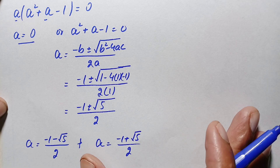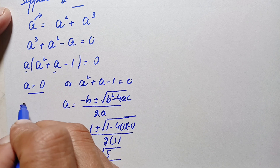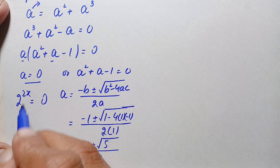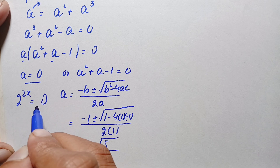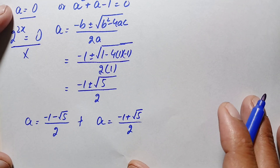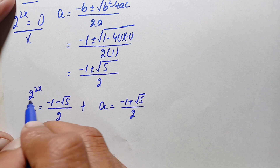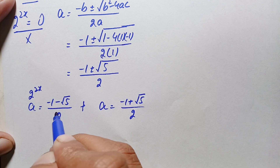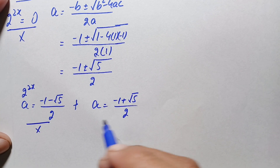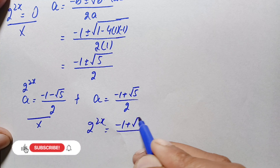Returning to our supposition a = 2^(2x): if a = 0, then 2^(2x) = 0, which is impossible for any real value of x since exponentials are always positive — so we reject this solution. If a = (−1 − √5) / 2, that is negative, but 2^(2x) is always positive — so we reject this solution too. Only the positive solution remains: 2^(2x) = (−1 + √5) / 2.